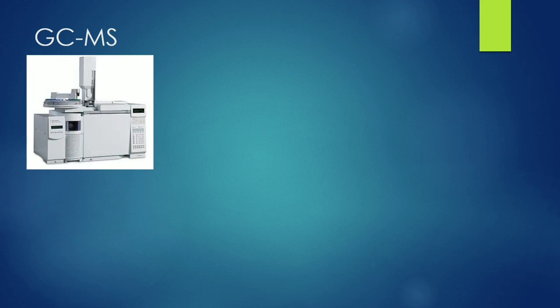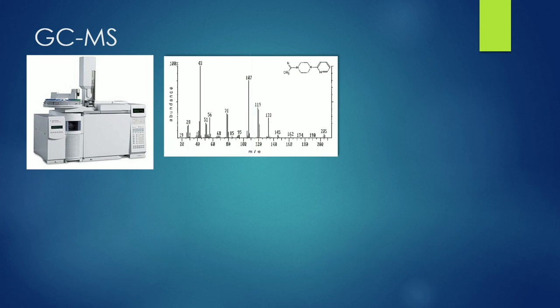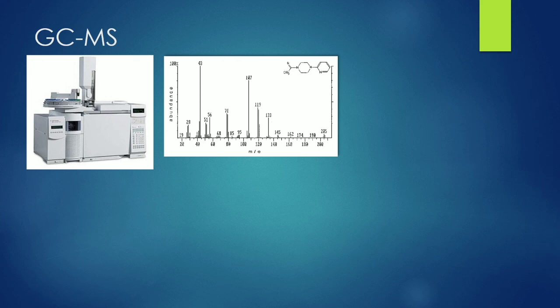This is a typical GCMS instrument, and this is how a GCMS spectrum looks like. In GCMS, the GC is the chromatographic part. In any chromatography you will have two parts: one is a stationary phase and the other is a mobile phase. Here the stationary phase is a silica column and your mobile phase is a gas — it can be helium or nitrogen, sometimes even hydrogen at high temperature.